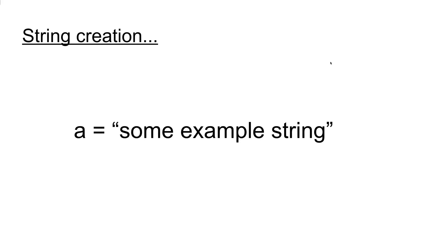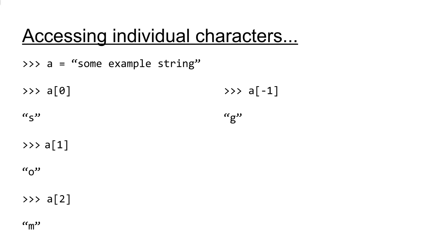If we wish to initialize a non-empty string, the syntax is identical except we write what we would like the string to contain within the quotes. In this example, we're setting a variable called A equal to some example string. This A variable is going to contain all of these characters in the sequence that you see them. So it's basically an array where each element is one character. We can access any of the individual characters in the string using the same bracket operator syntax you would use for a list, or an array if you're coming from another coding language.